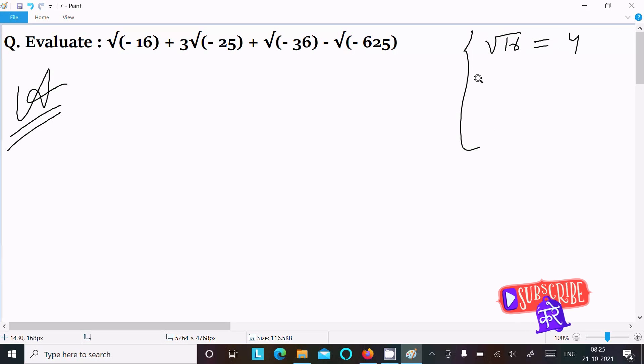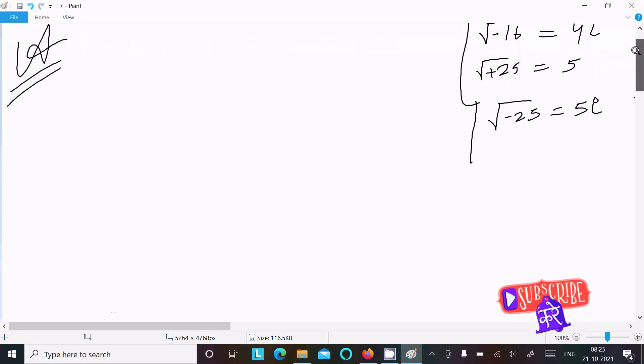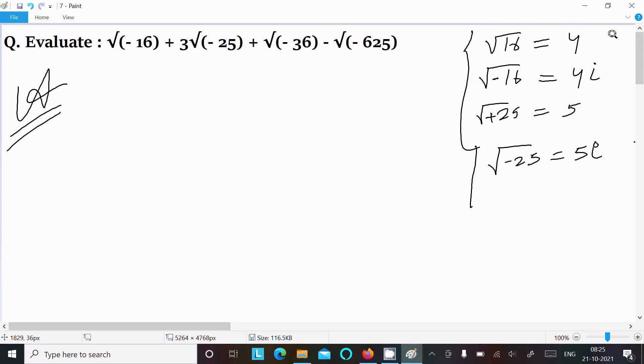When you include minus inside the root, √(-16) returns 4i. After that, √(-25) returns 5, so √(-25) returns 5i. Like that, √(-36) returns 6i.